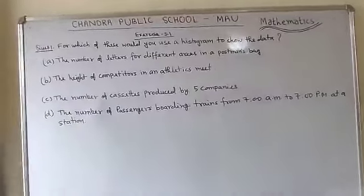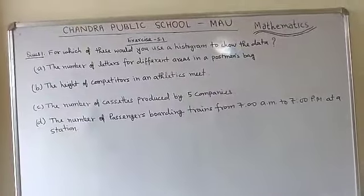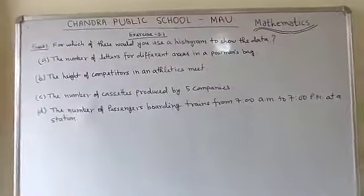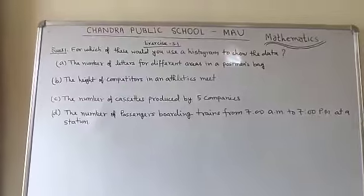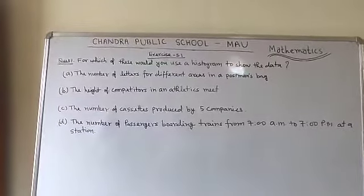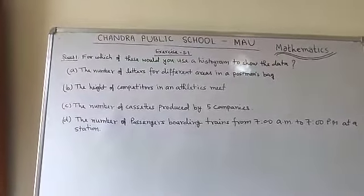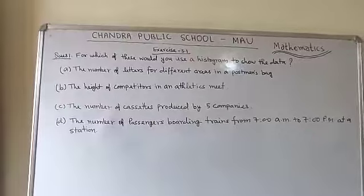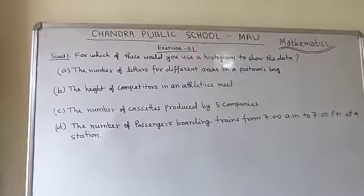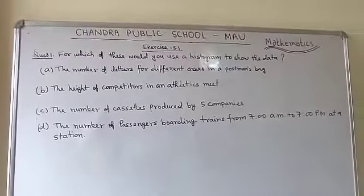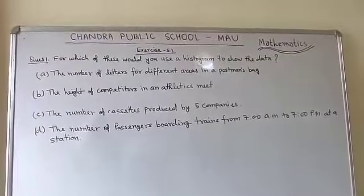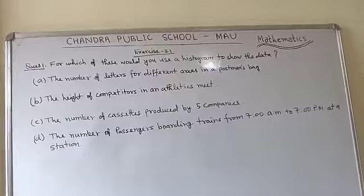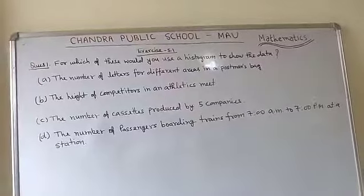Welcome students. Today I am going to start Exercise 5.1. Your first question is: for which of these would you use a histogram to show the data? Option A is given as the number of letters for different areas in a postman's bag.